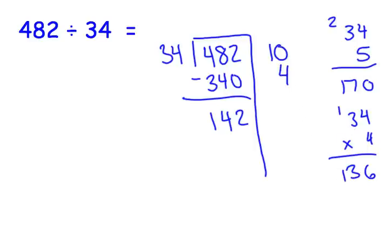Let's take out 4 groups of 34. 4 times 34 is 136. Subtract that out. We need to borrow. 12 minus 6 is 6, 3 minus 3 is 0, and 1 minus 1 is 0. That's going to be our remainder because 34 cannot go into 6.